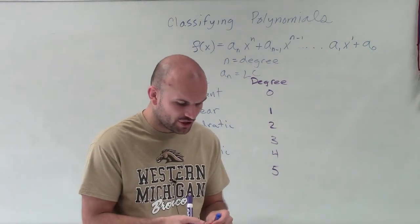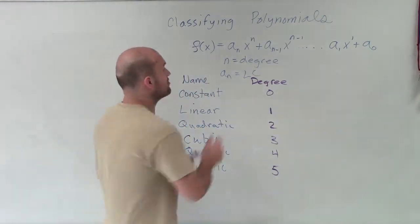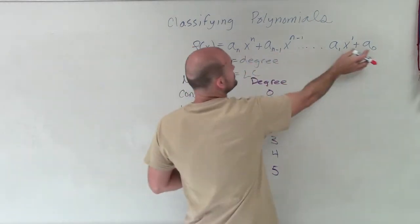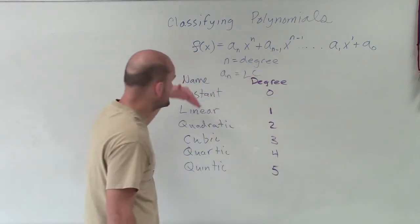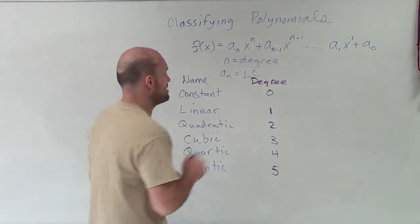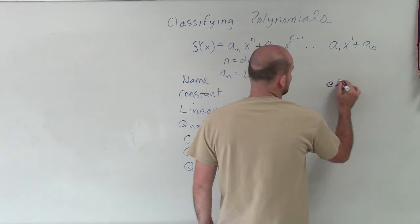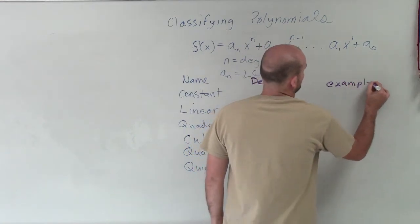So now, the number of terms, remember, a polynomial is going to be a set of monomials. Each one of these are going to be a set of monomials. Now, when we're dealing with a constant, we're only going to have our one monomial.